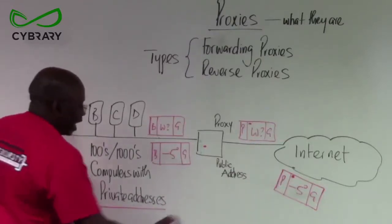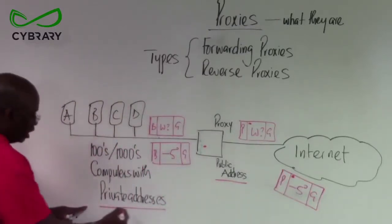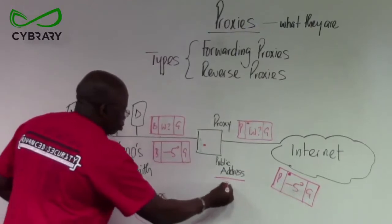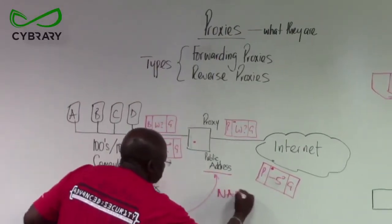Private addresses are being converted to a public address. These private addresses are being converted to a public address. And this is what we call network address translation.